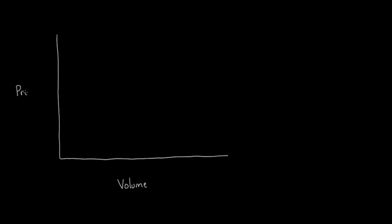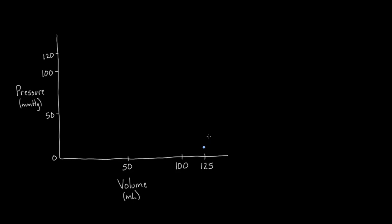I'm going to draw one for you here very quickly. On this axis we've got pressure in millimeters of mercury, and on this axis we've got milliliters. We're going to use 50, 100, and 125 or so on the pressure axis — a pretty normal set of numbers. And on the volume axis, we've got 0, 50, and up to about 120. So this is our pressure-volume loop. I like to start where pressures are low and volumes are really high — around here — and imagine this is the end of diastole, where the left ventricle is full of blood and is going to start rising in pressure slowly.